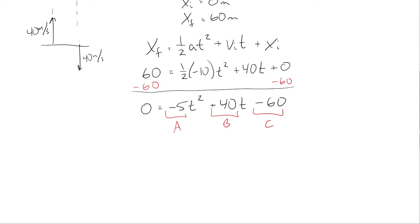And the quadratic formula says that T is going to be equal to negative B plus or minus the square root of B squared minus 4AC all over 2A.